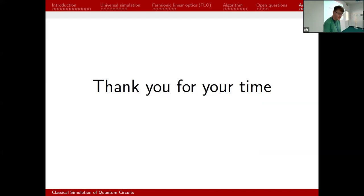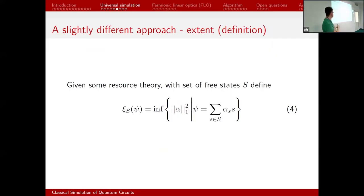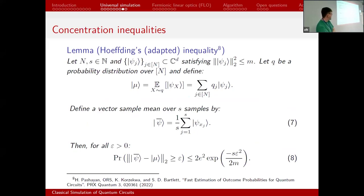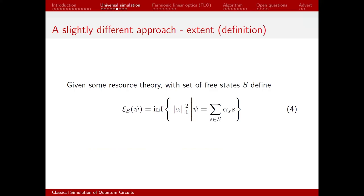Oscar has a question online. He asks for the definition of the extent. The extent is the minimal possible one-norm-squared of a vector alpha, such that there is a decomposition of your target vector psi in terms of free states with coefficients from alpha. The reason you care about this is Hoeffding's inequality: the extent controls the parameter M, which in turn controls how many samples you have to take. The formal definition is: minimal one-norm-squared.